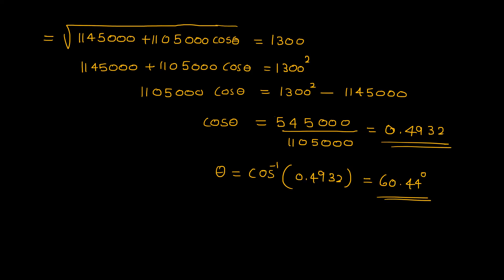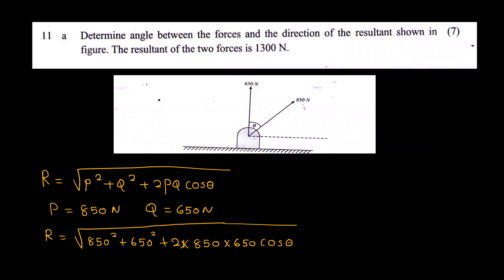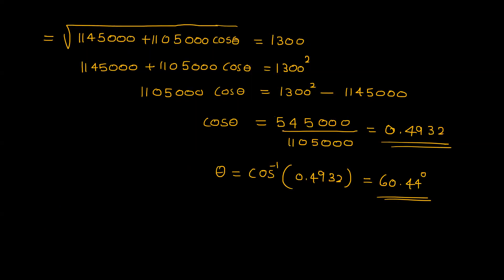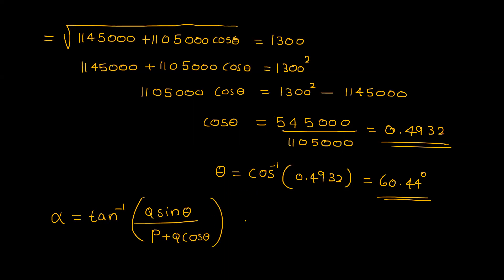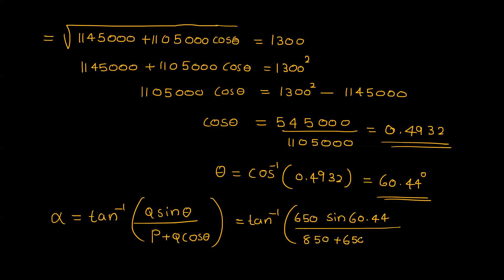The direction of the resultant: alpha is equal to tan inverse of Q sinθ divided by P plus Q cosθ. Alpha is equal to 25.77 degrees. Thank you.